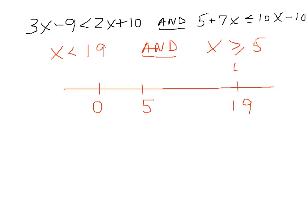So less than 19 looks like that. Greater than or equal to 5 looks like that. And the solution is simply those places where both of them are true.